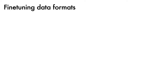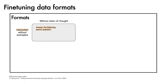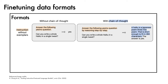To give a better sense of the data seen by the model during fine-tuning, we'll walk through the data formats. We'll first consider instructions without exemplars, starting with those that do not include chain-of-thought. An example instruction is: "Answer the following yes-no question: Can you write a whole haiku in a single tweet?" The target here is simply "yes." We can compare this to an example with chain-of-thought: "Answer the following yes-no question by reasoning step-by-step. Can you write a whole haiku in a single tweet?" This time the answer includes reasoning: "A haiku is a Japanese poem, three-line poem, that is short enough to fit in 280 characters. The answer is yes." The part highlighted in blue identifies the chain-of-thought content.